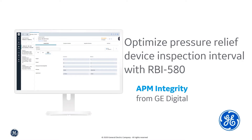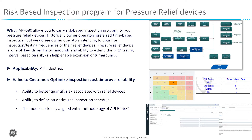Hello and welcome everyone to this session where we will talk about how to optimize your inspection interval for pressure relief devices using RBI 580. From a value perspective, the question is why? API 580, or American Petroleum Institute's Recommended Practice 580, allows you to carry out a risk-based inspection program for your pressure relief devices.